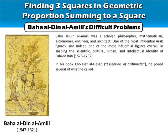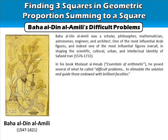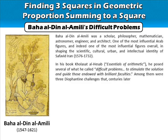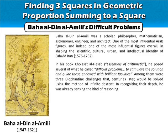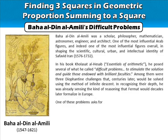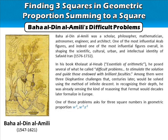In his book Khulasad al-Hisab, he posed several of what he called difficult problems to stimulate the solution and guide those endowed with brilliant faculties. Among them were three Diophantine challenges that centuries later would be solved using the method of infinite descent. One of these problems asked for three square numbers in geometric proportion whose sum is also a square.